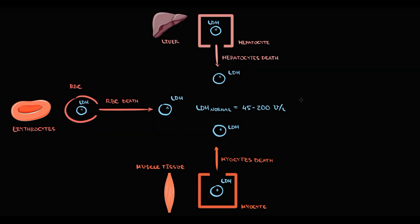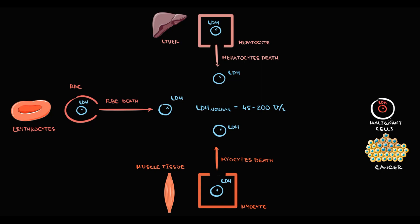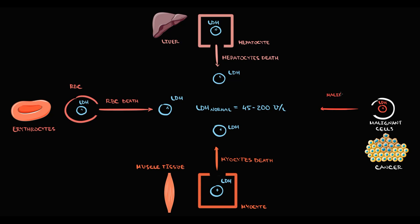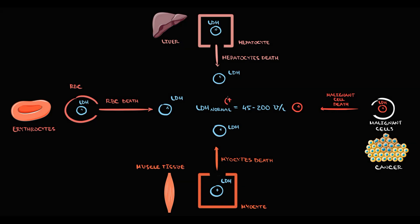The first pathological state that can cause increasing LDH is malignancy. Cancer cells produce energy by anaerobic glycolysis, and because LDH plays a crucial role in anaerobic glycolysis, cancer cells have a lot of LDH. When cancer cells die due to the immune response or during chemotherapy, intracellular content of the cancer cells — including LDH — is released into the blood, causing increased LDH levels.